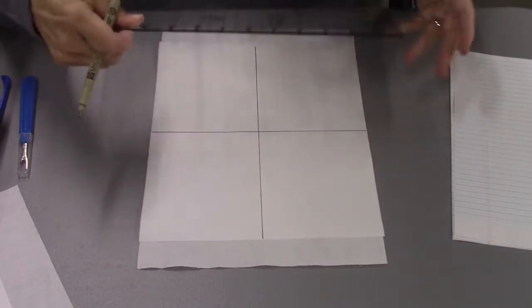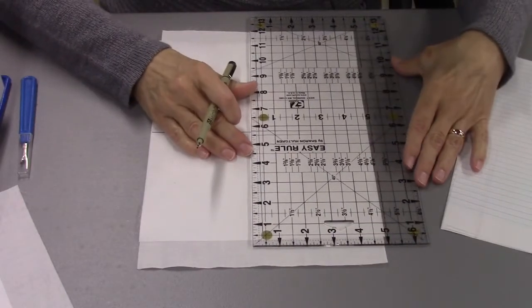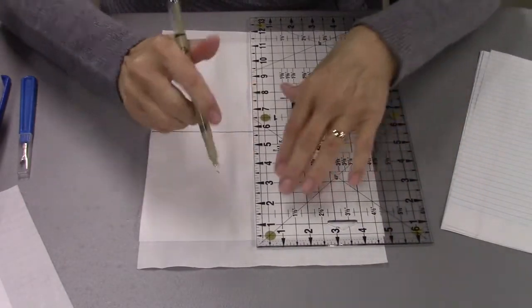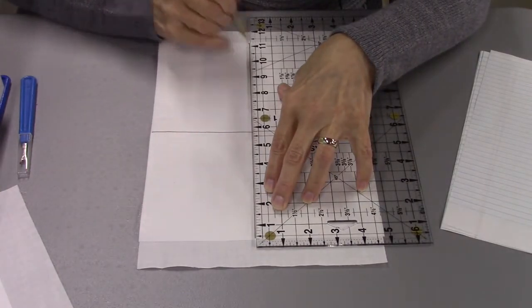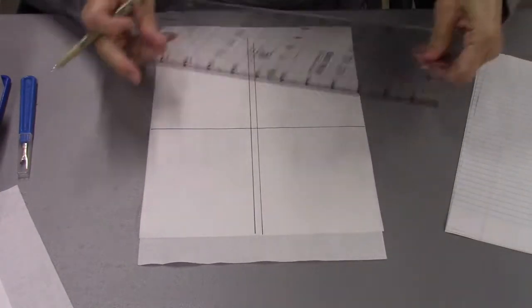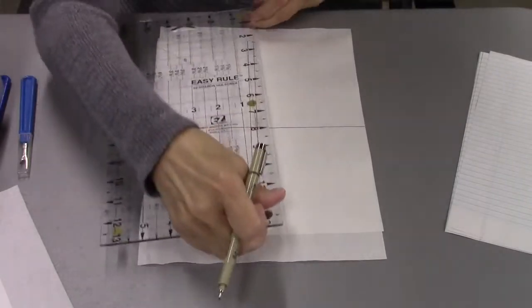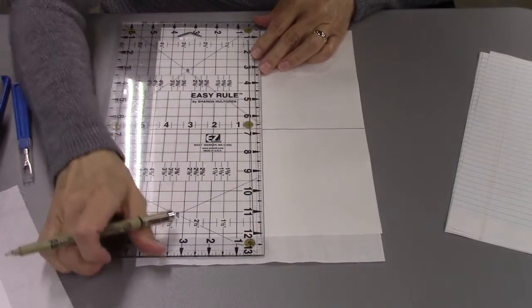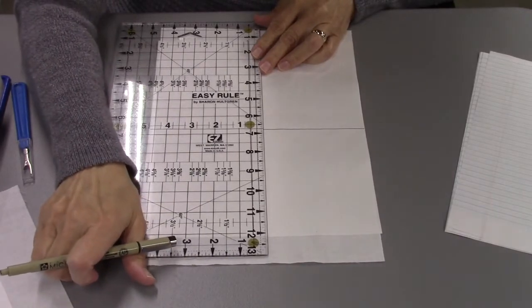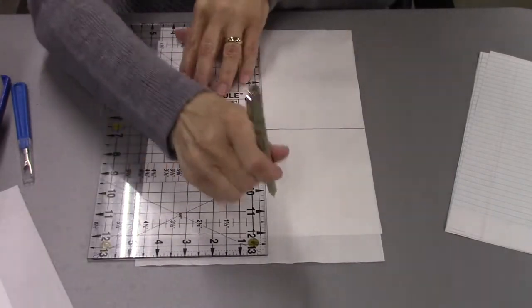So I've got my lines there, and then I'm going to go in by a quarter of an inch on each side of those lines so that I remember there are seam allowances I need to consider. I don't want to write outside of that line.